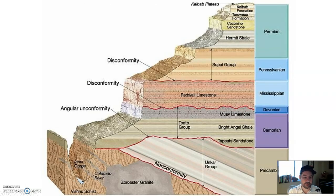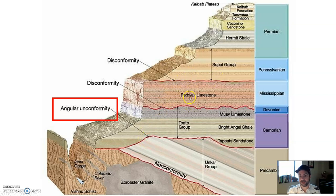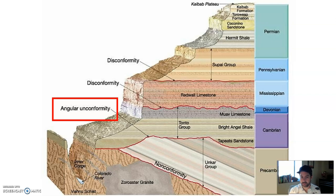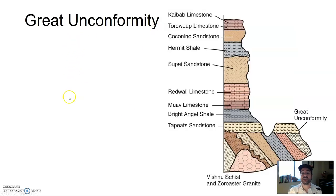A great example is the Grand Canyon, which has a number of unconformities. There's a disconformity between sedimentary rock layers — missing information. There's also an angular unconformity because you have angled or tilted layers below horizontal layers. And there's a nonconformity at the bottom because we have igneous and metamorphic rocks below and sedimentary rocks above. With the angular unconformity in the Grand Canyon, it actually has a special name — while the type is still angular unconformity, it's known as the Great Unconformity.